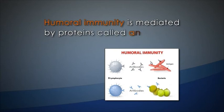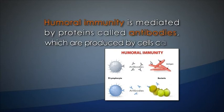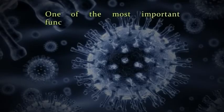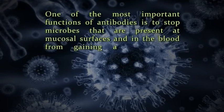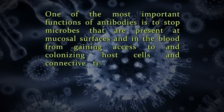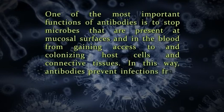But T-lymphocytes do not produce antibodies. Humoral immunity is mediated by proteins called antibodies, which are produced by cells called B-lymphocytes. Secreted antibodies enter the circulation and mucosal fluids and they neutralize and eliminate microbes and microbial toxins that are present outside host cells, in the blood or in the extracellular fluid derived from plasma, and in the lumens of mucosal organs such as the gastrointestinal tract and respiratory tracts. One of the most important functions of antibodies is to stop microbes that are present at mucosal surfaces and in the blood from gaining access to and colonizing host cells and connective tissues. In this way, antibodies prevent infections from ever being established.